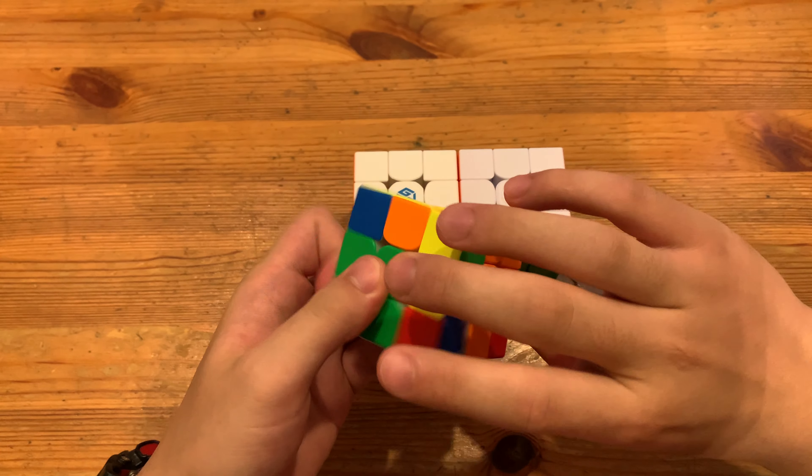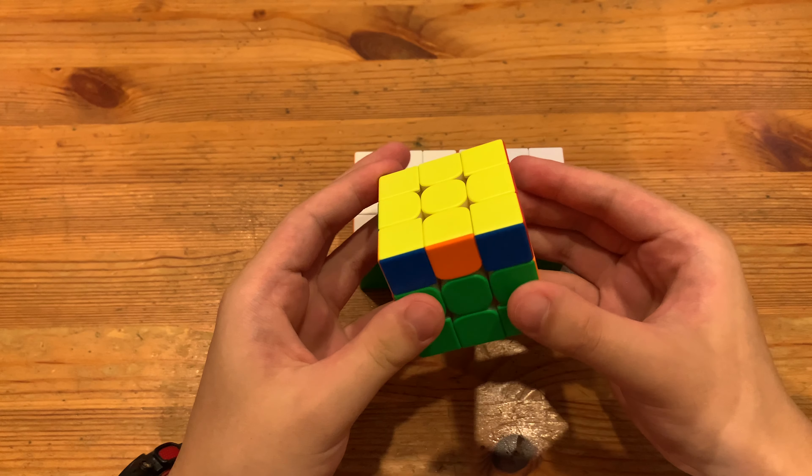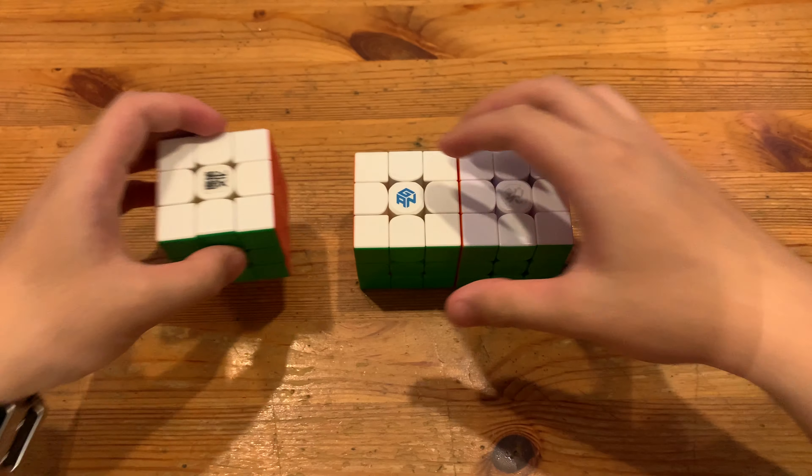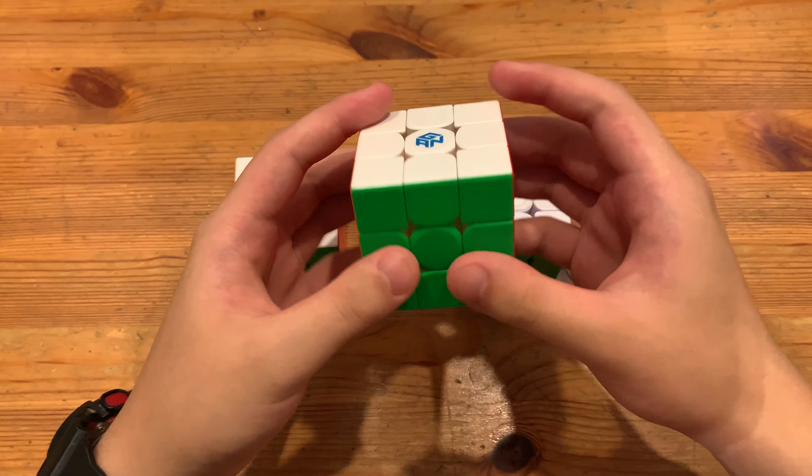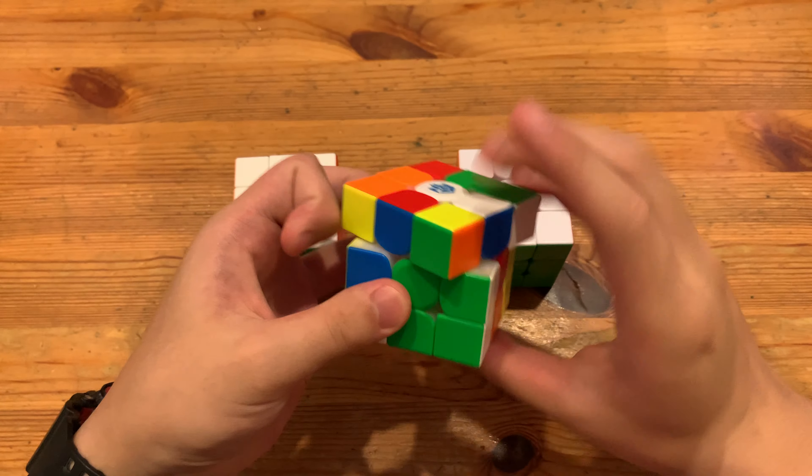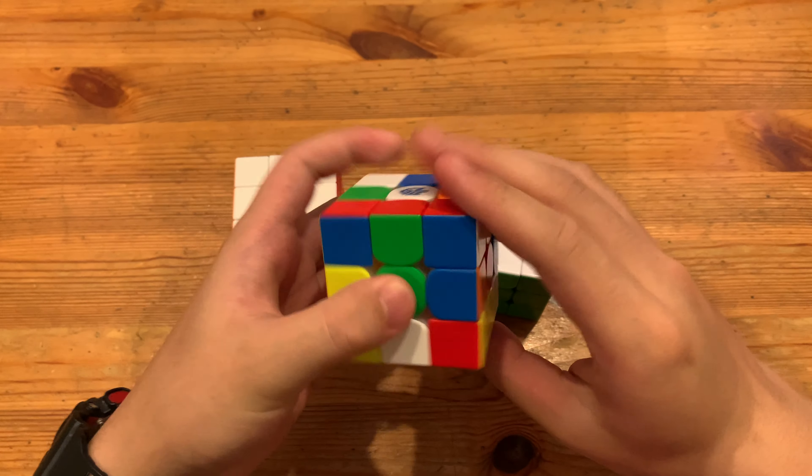Now I just have OLL slash OLL CP because the standard ALG, the ALG I use for OLL is the ALG for that OLL CP. Anyways, this is the second scramble.